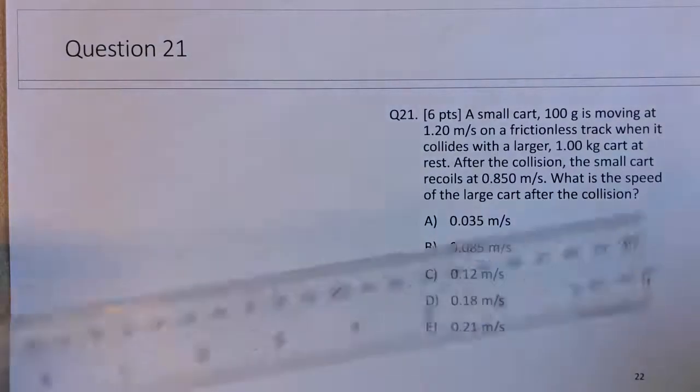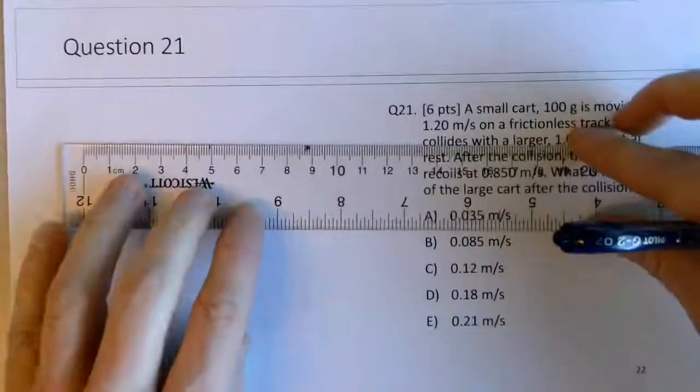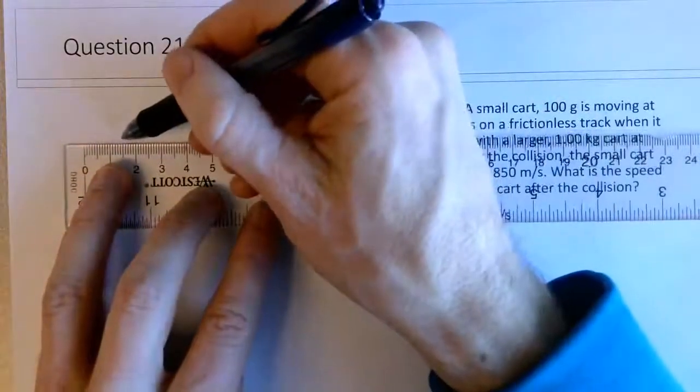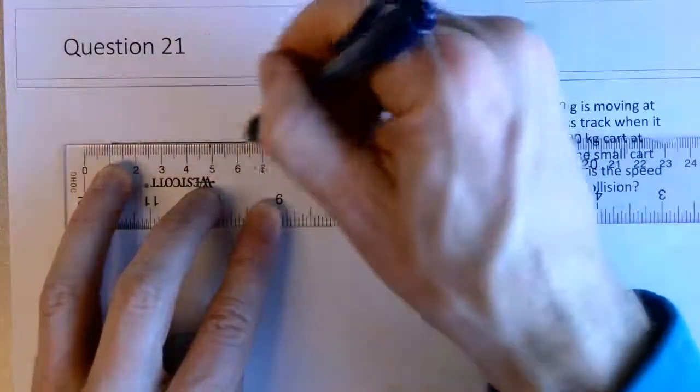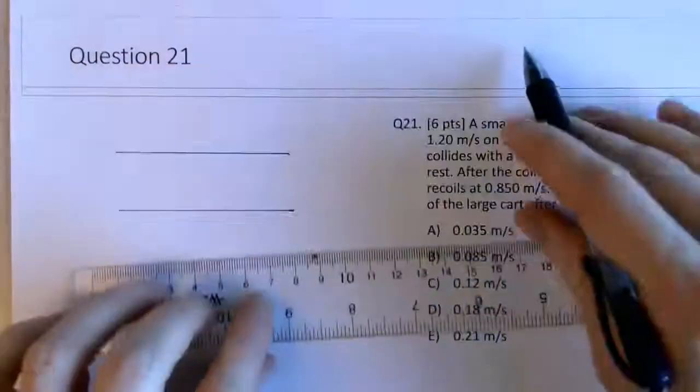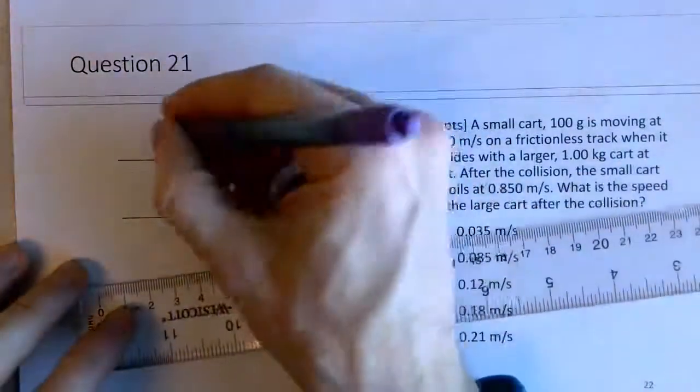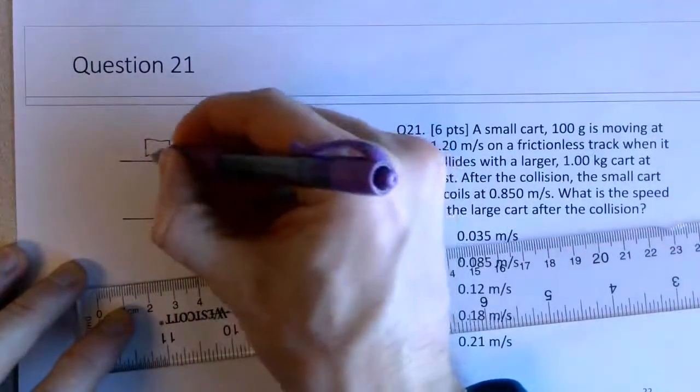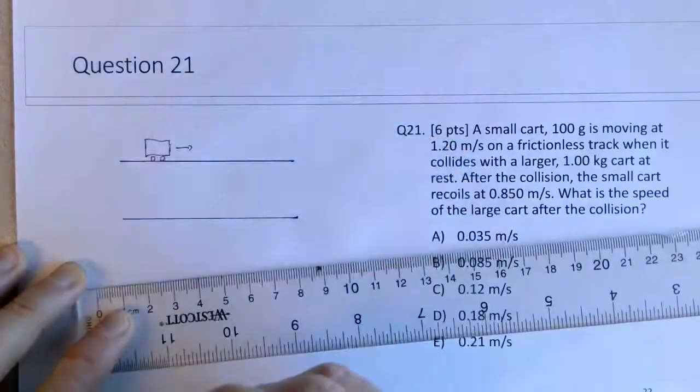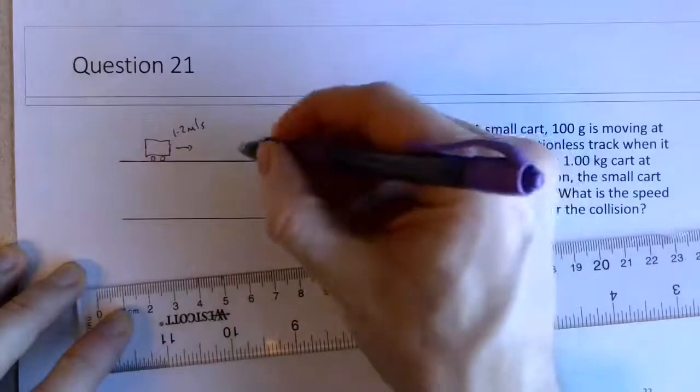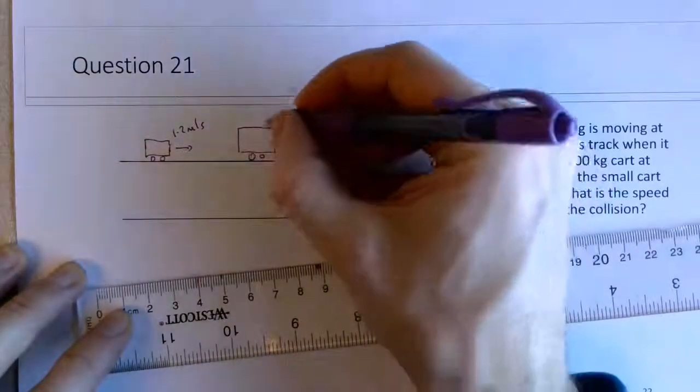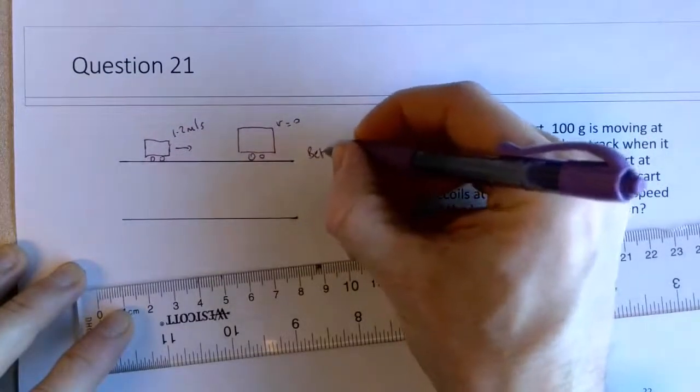So if you like question 20, I'll draw sort of a before and after picture. So we've got the small car moving at 1.2 meters per second towards a bigger car that's initially at rest. So this is our before situation.